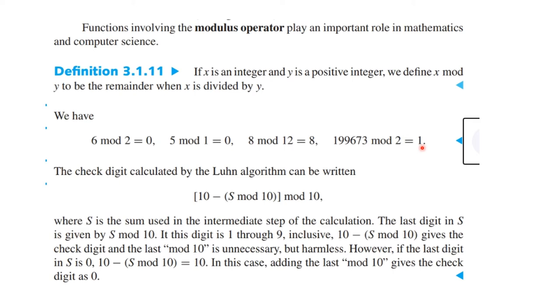Here's actually a formula for the check digit calculated by the Luhn algorithm. It can be written as [10 - (S mod 10)] mod 10, where S is the sum of the digits in the intermediate step. So you take the mod 10 of that, and then you subtract that from 10 if it is bigger than that. Otherwise, it will be unnecessary to subtract this if the number is not bigger than 10.